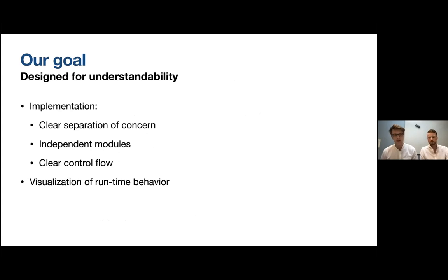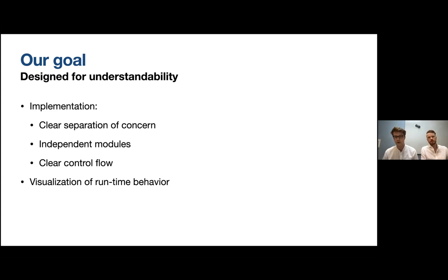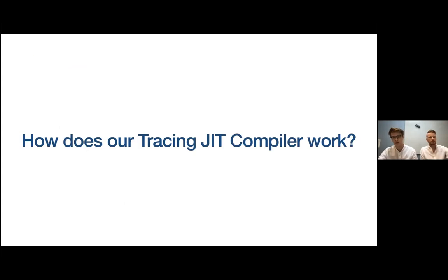This is where our thesis project fits in. Our goal was to implement a tracing just-in-time compiler designed for understandability. Understandability is a subjective goal — there's no clear way of proving whether we've succeeded — so instead we focused on some criteria that we believe contribute to understanding a project like this. We made sure all the different parts of the compiler are well divided into distinct modules with a clear purpose for each. We also wanted the connections between these modules and how the behavior of one affects the others to be clear and easy to follow. In addition, we developed an accompanying visualization toolkit that shows runtime behavior of our tracing just-in-time compiler.